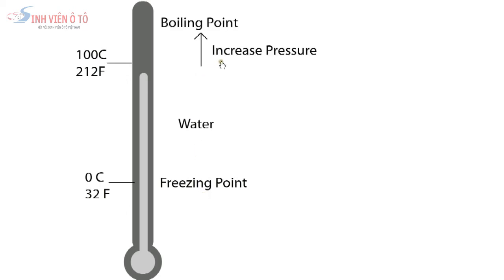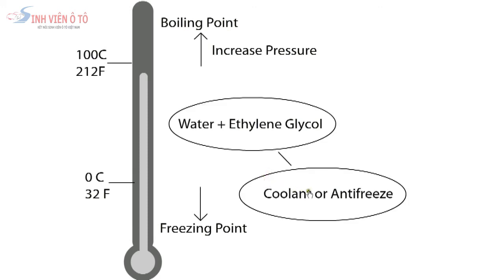To increase the boiling point, the pressure in the system is increased, and to lower the freezing point, a chemical antifreeze is added. Coolant antifreeze or ethylene glycol also contains rust inhibitors to prevent corrosion and has added lubrication properties.